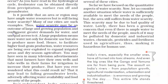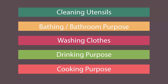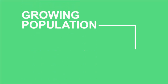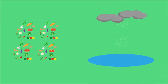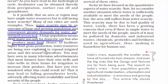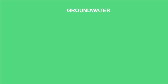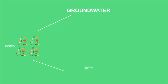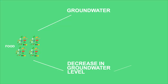Water scarcity may be an outcome of a large and growing population. First, a growing population needs more water for domestic purposes. Second, a growing population also needs more food, and to grow more food, water is required for agricultural needs. Water is needed to meet the growing needs of a growing population, which leads to falling groundwater levels, and that will again affect food security — keep this cycle in mind for exams.